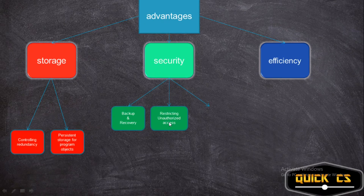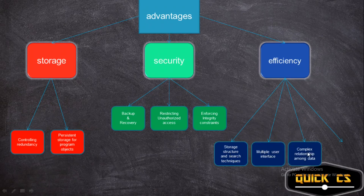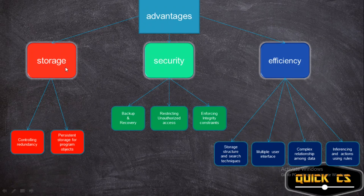For efficiency you have four advantages: first, storage structures and search techniques; second, multiple user interface; third, complex relationship among data; and fourth, inferencing and actions using rules. Now that we've divided the nine advantages into three categories — storage, security, and efficiency — with two, three, and four respective advantages, it's much easier to remember.